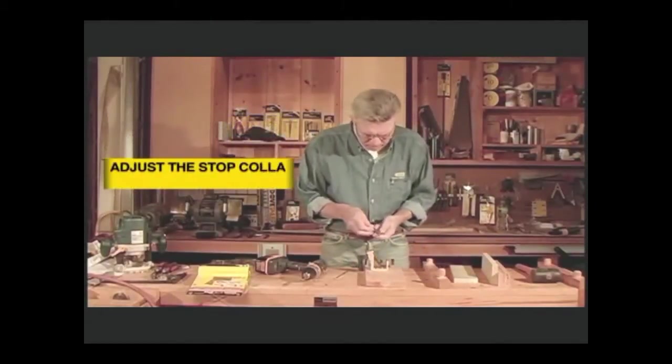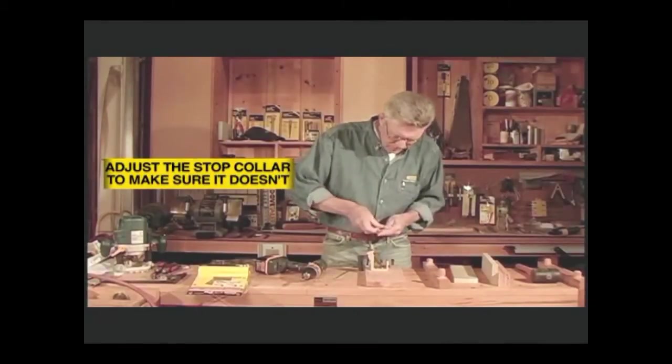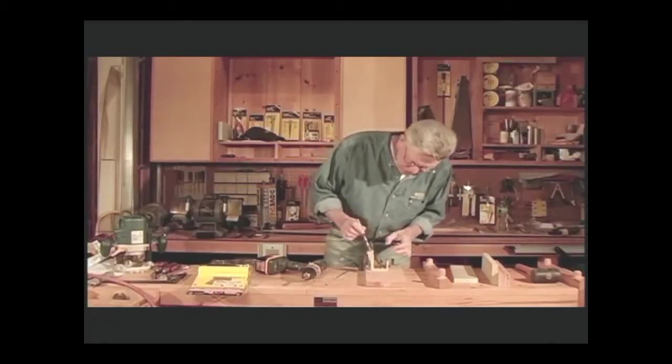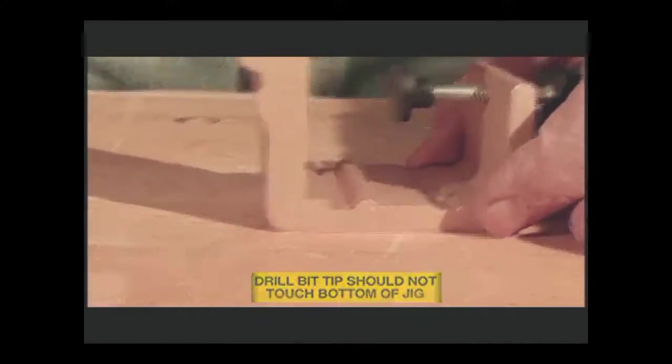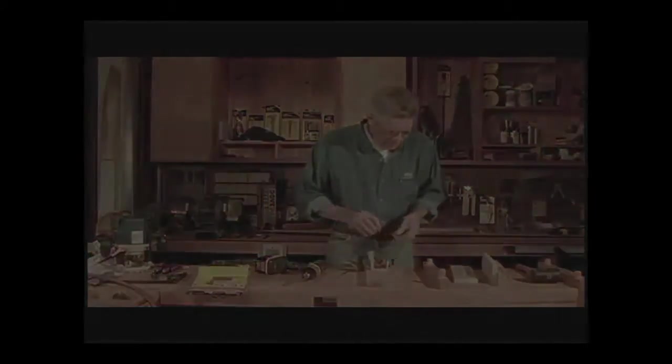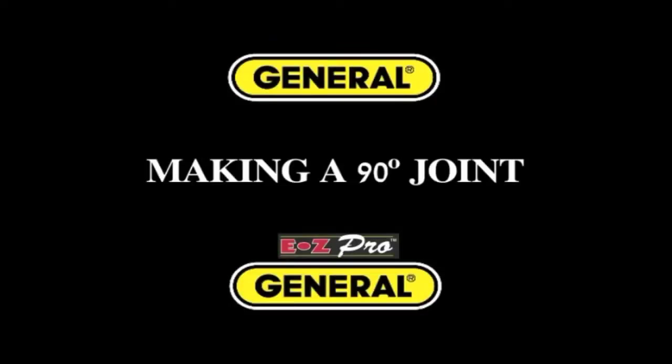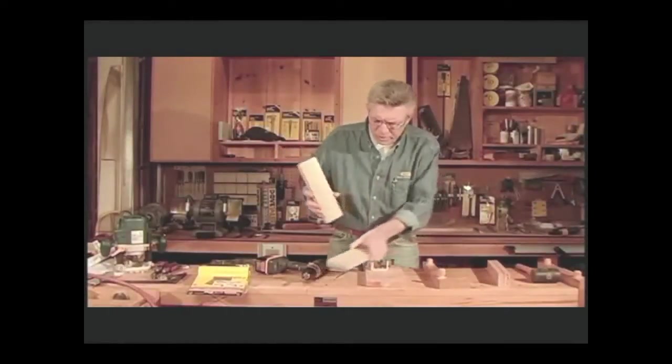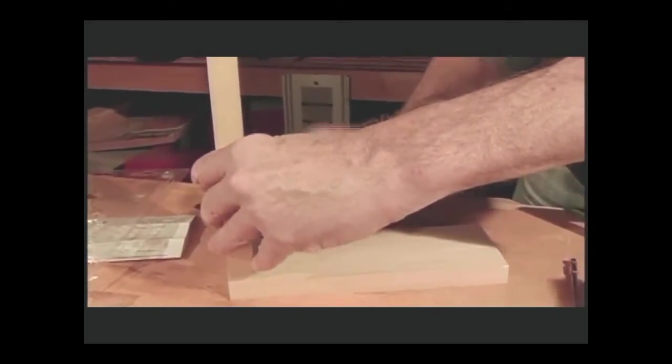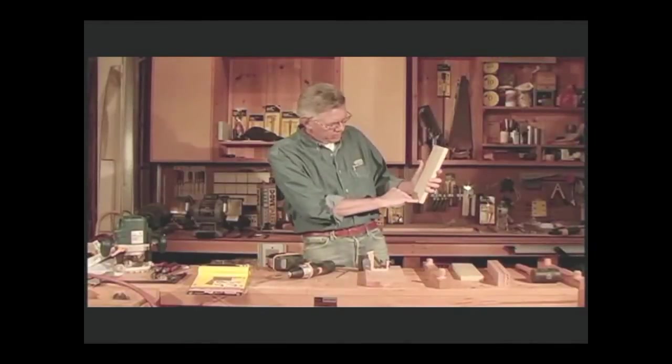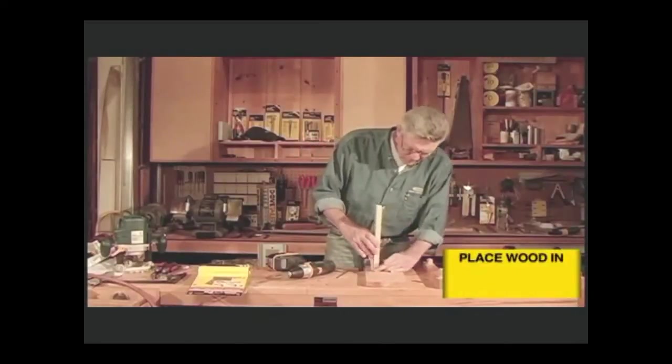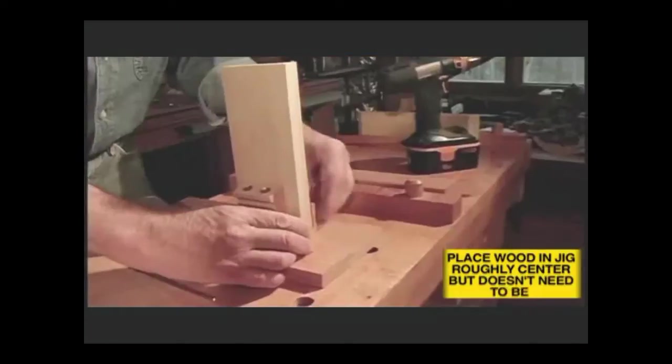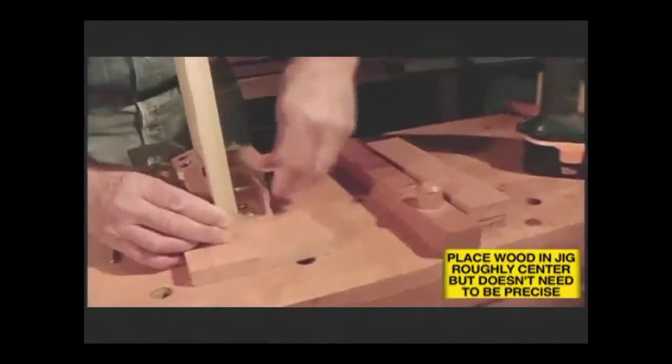What we're going to do is join these boards in this fashion as if this was going to be an apron for a table. So we're going to put two pocket holes through the face of this board. This will be on the inside. It will come out the bottom intersecting there. So you'll want to roughly center the board in the jig, tighten down the clamp.